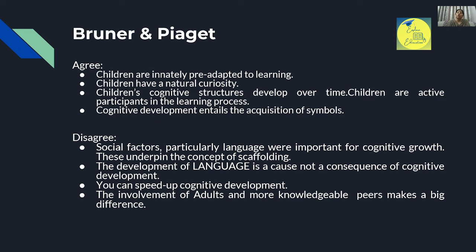The involvement of adults and more knowledgeable peers makes a big difference in Bruner's framework because Bruner emphasizes society, culture, language, adults, and more knowledgeable peers as factors that help us learn better. In contrast, according to Piaget, the child's development is independent — social influence does not play the same central role.